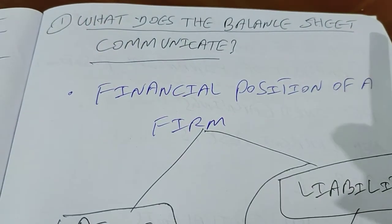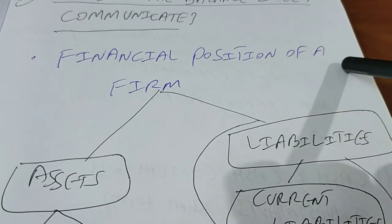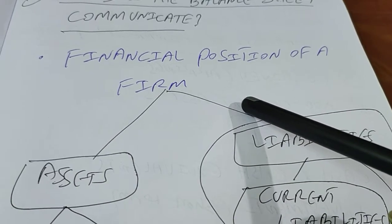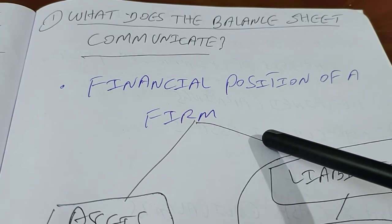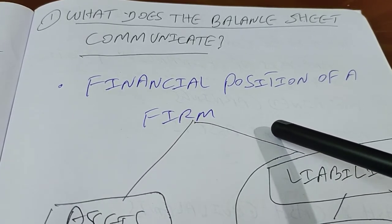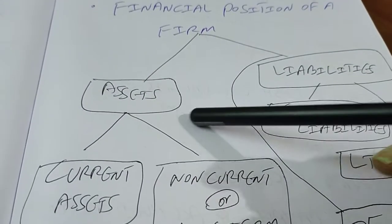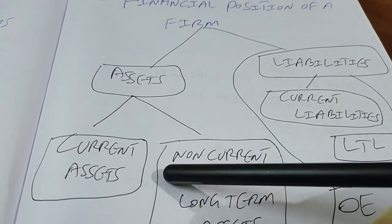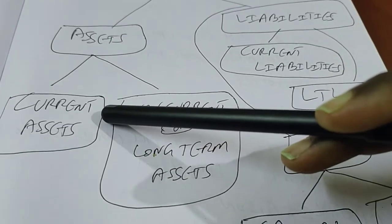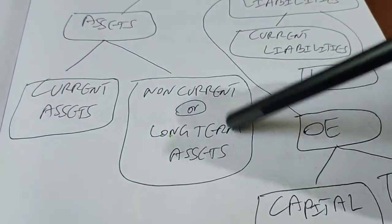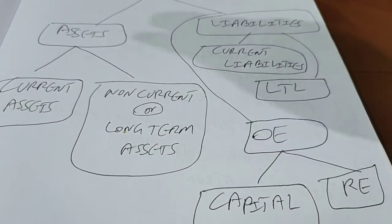For the first question — what does the balance sheet communicate — the balance sheet communicates the financial position of a company or an entity. Entity is a broader word; it consists of a sole trader firm, partnership firm, and a company. We want to know the assets of the entity and the breakup of those assets — that is current assets and non-current or long-term assets — how much they are and what is their quality.